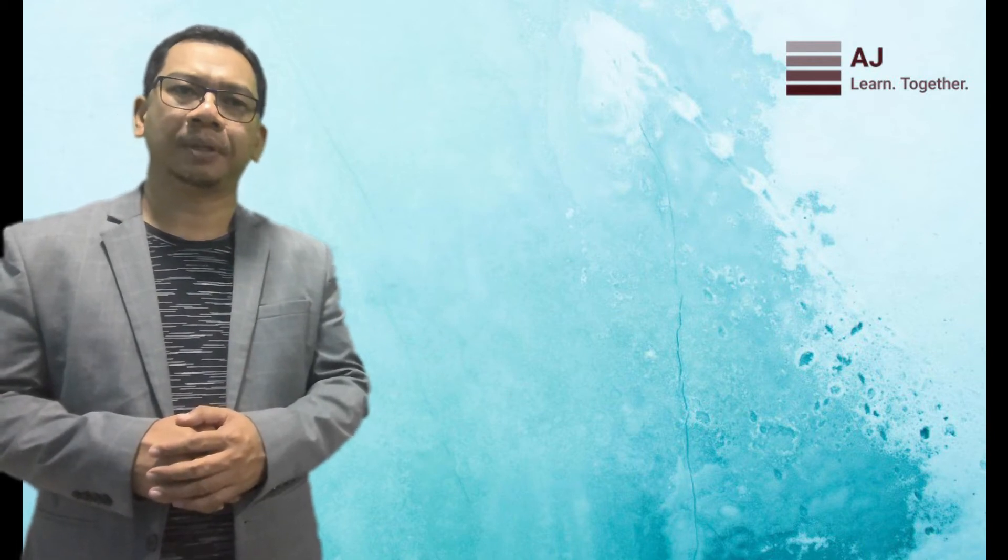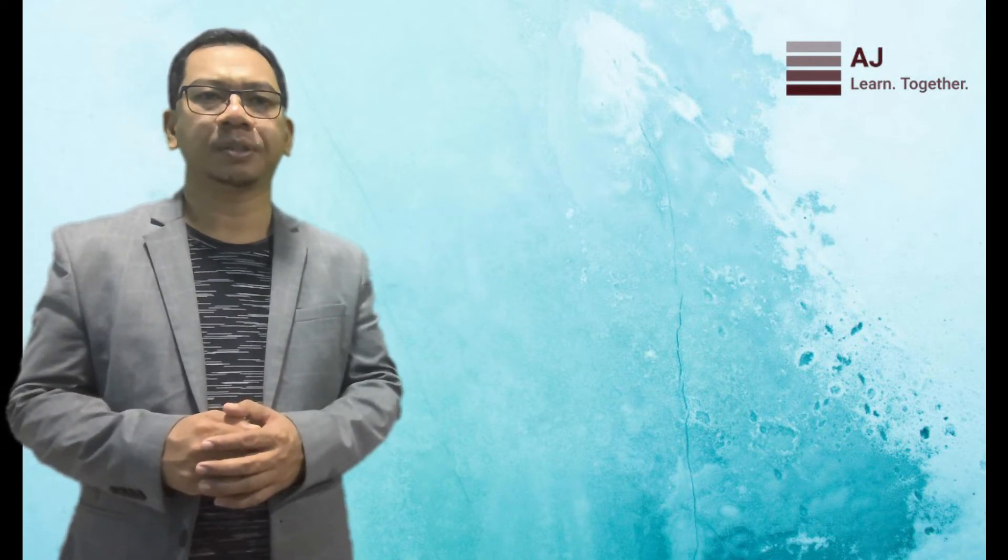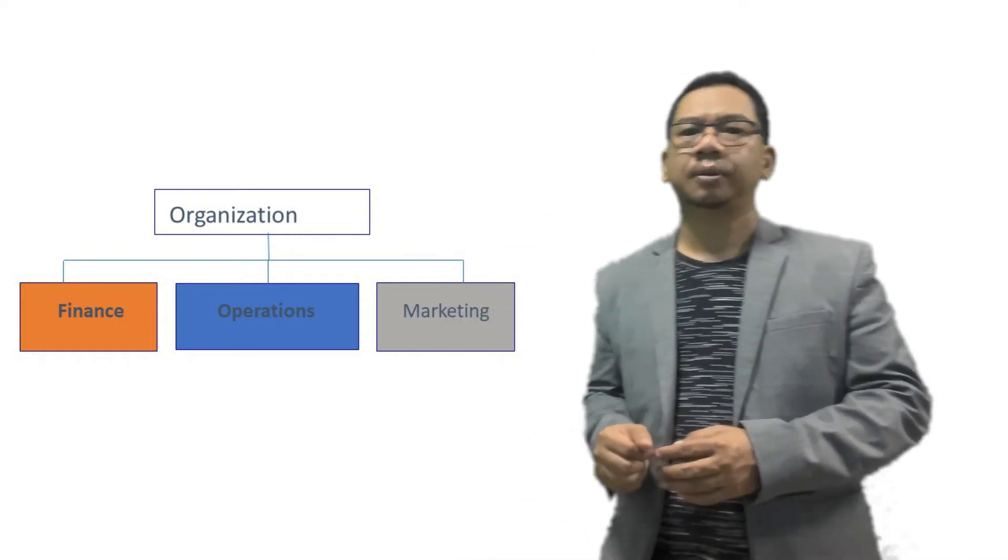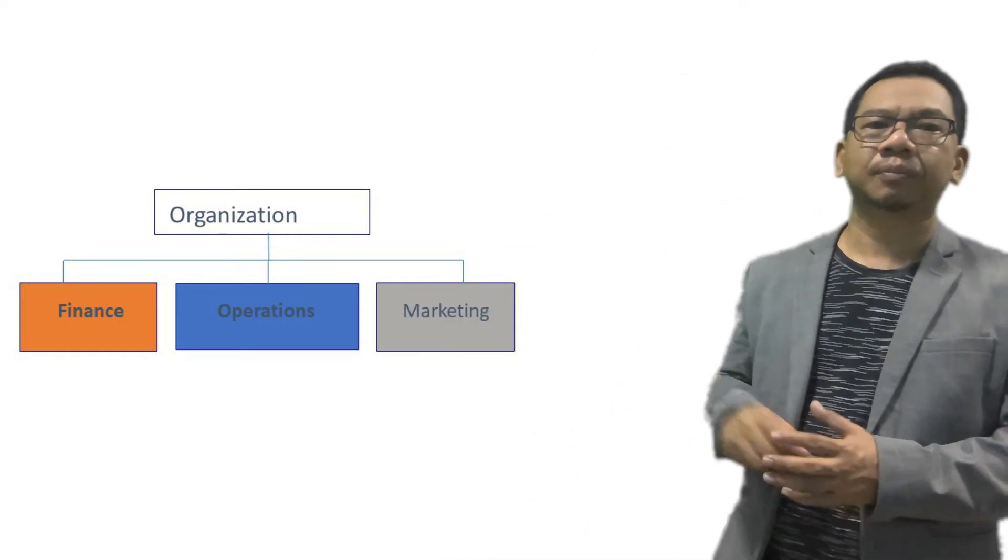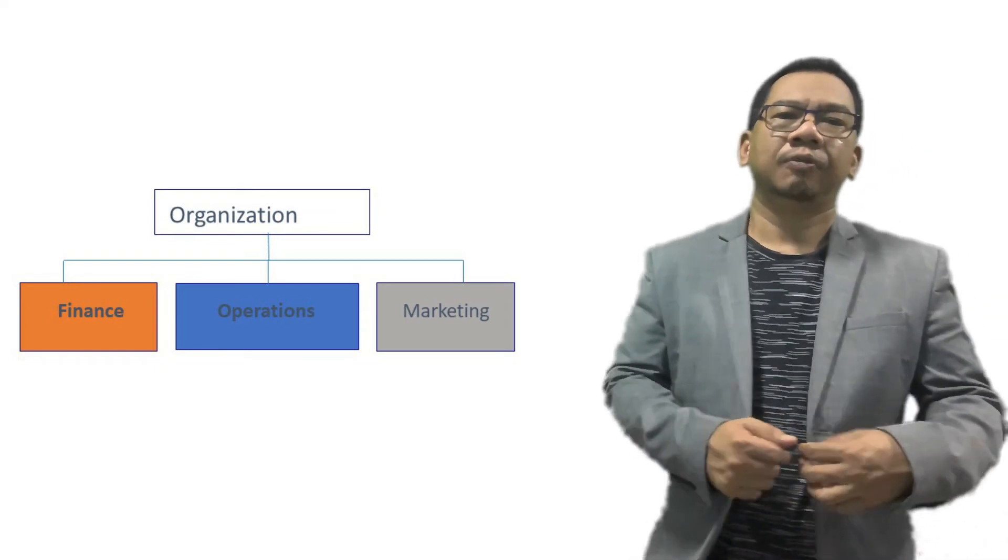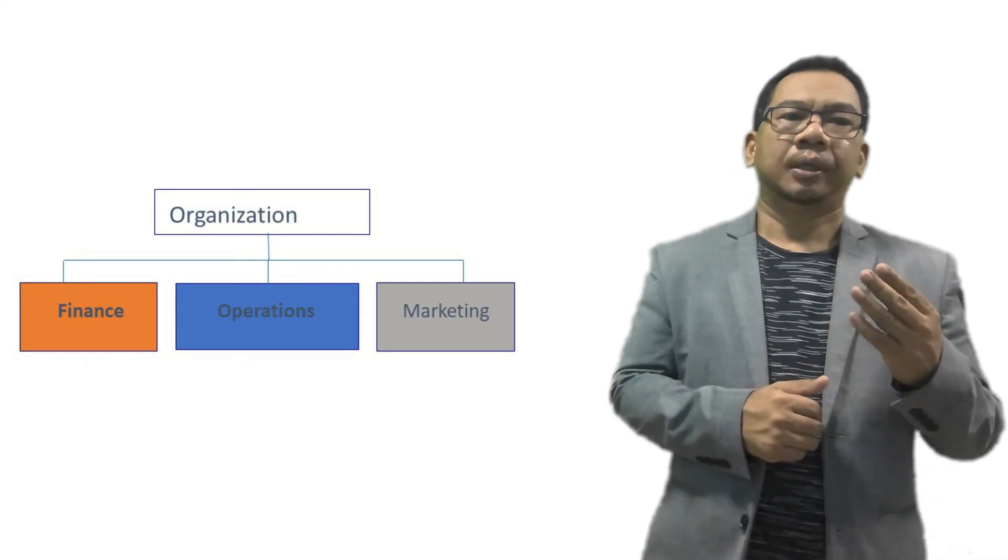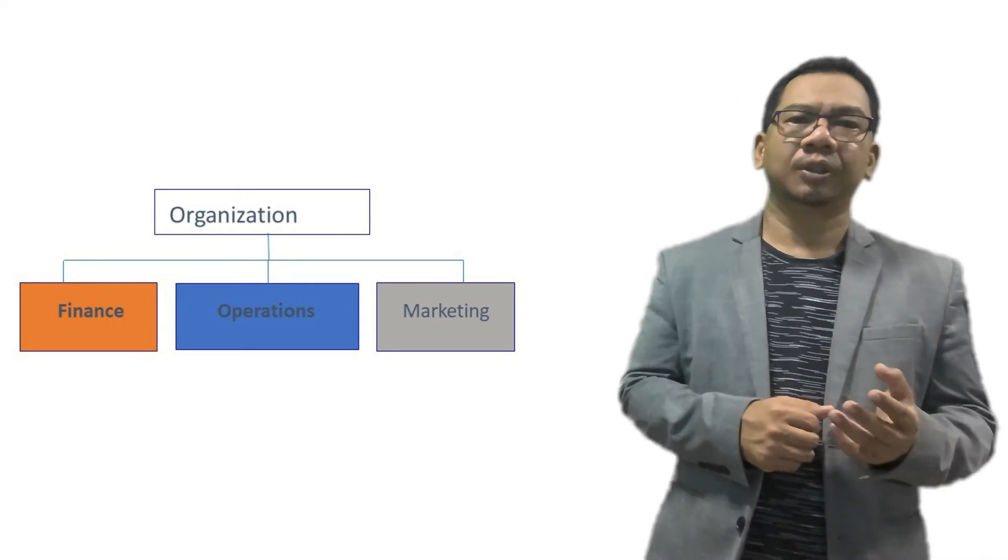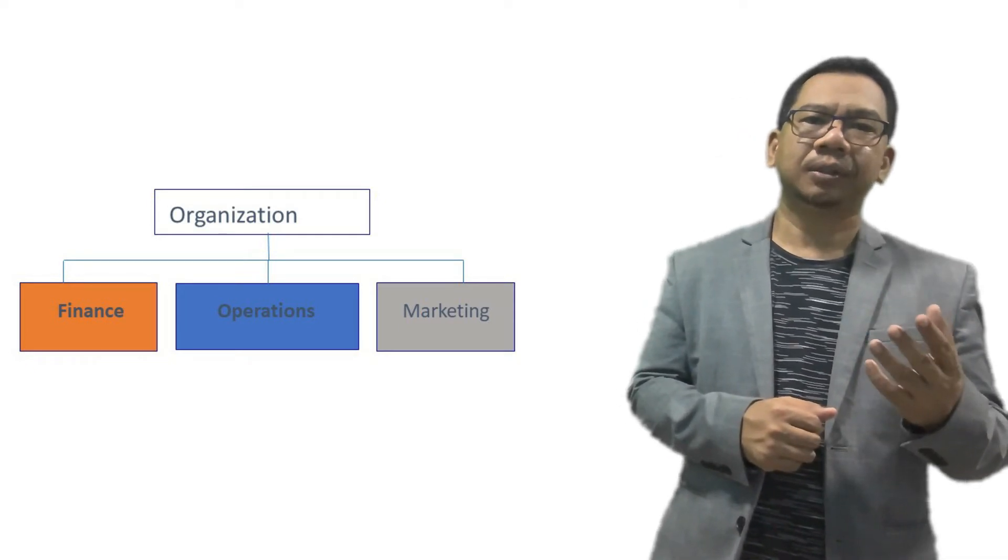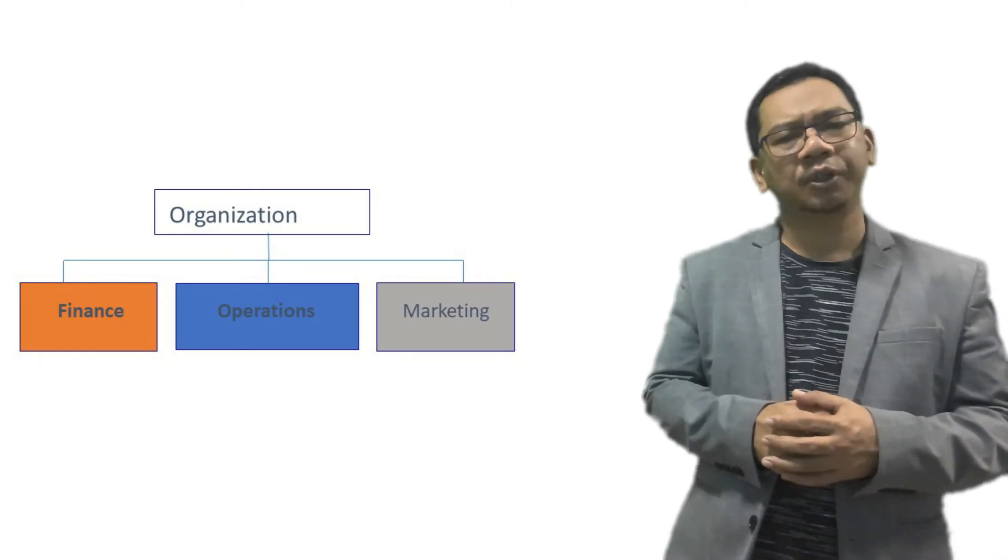To create and produce goods and services, all organizations typically should have at least to perform three essential functions. The first one is operation function. This is the core function. For example, in fast food restaurants, the kitchen section that make a burger is the running department that run the operation function.